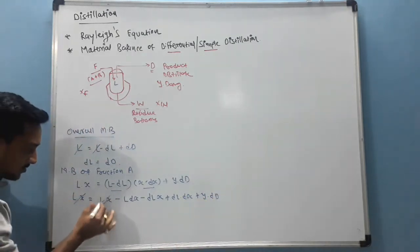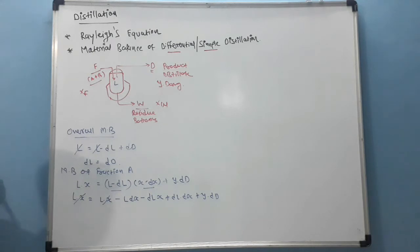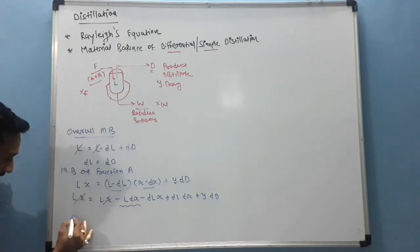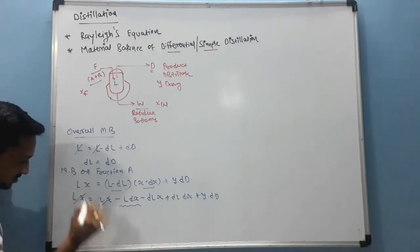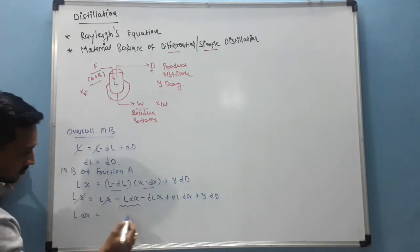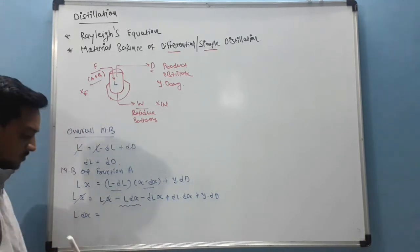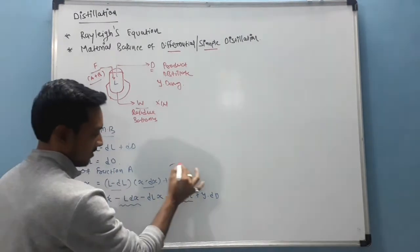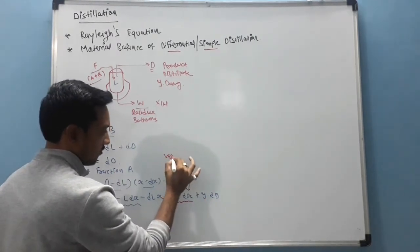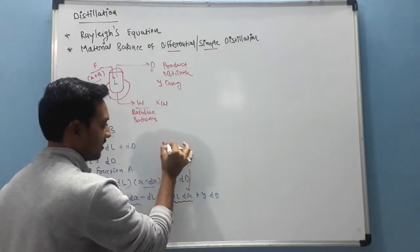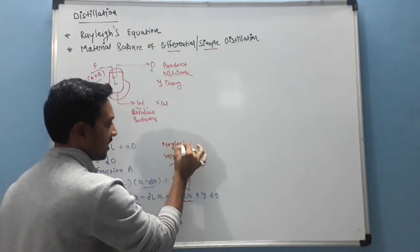L into X, L into X cancel. From this side becomes positive, is equal to DLDX. In the still, it is present in very less amount, so it can be neglected.